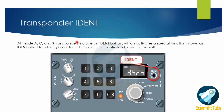Now let's have a look at the transponder ident. All mode A, mode C, and mode S transponders include an ident button which activates a special function known as the ident — short for identity — in order to help air traffic controllers locate an aircraft. In the image you can see this black button which is the ident button.